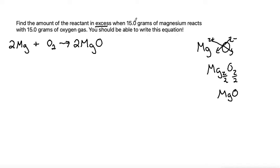We are given a mass of both of our reactants, so we know this is a limiting reactant problem since we're trying to find the amount that's in excess. That means we're going to have one of our reactants left over at the end of the reaction.